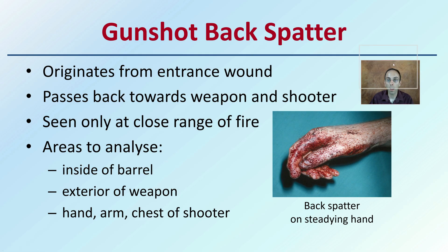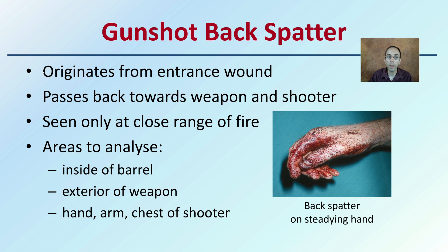The back spatter originates from the entrance wound and passes back towards the weapon and the shooter — seen only at close range of fire. Areas to analyze include inside the barrel, exterior of the weapon, the hand, arm, and chest of the shooter. This shows the back spatter on a steadying hand and how fine the mist can be, since this is high velocity.